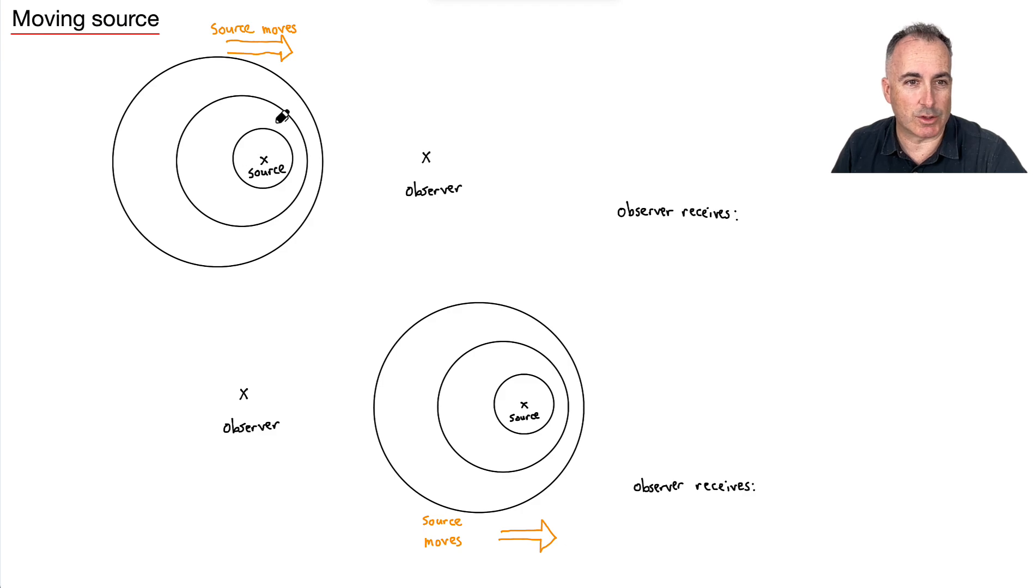That means the center of this circle, for example, is probably here. That's where the source was when it emitted that first one. Then the source was probably over here when it emitted the middle one, and now it's here when it emits this other one. You have to kind of imagine this. What's interesting is that now you can measure the wavelength. This distance, that's lambda.